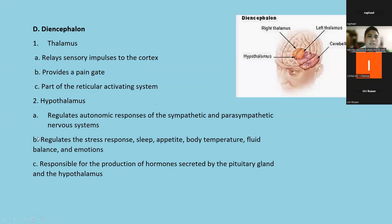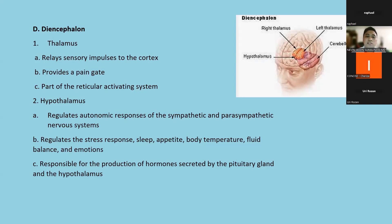Next is the diencephalon. In the diencephalon, we have two thalamus and the hypothalamus. The thalamus relays sensory impulses to the cortex and also provides the pain gate — the pain center of our brain is in the thalamus.